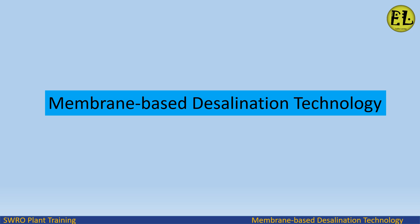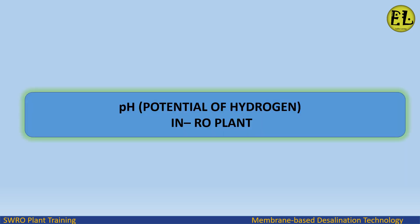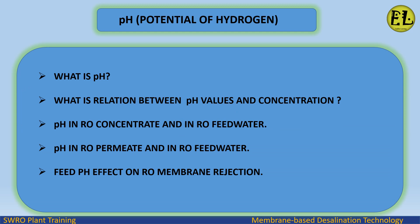Welcome to Endless Learning Training Series: The Membrane-Based Desalination Technology. In this video we will study about pH — potential of hydrogen — in RO plant. Topics covered include: what is pH, the relation between pH values and concentration, pH in RO concentrate and feed water, pH in RO permeate and feed water, and feed pH effect on RO membrane rejection.